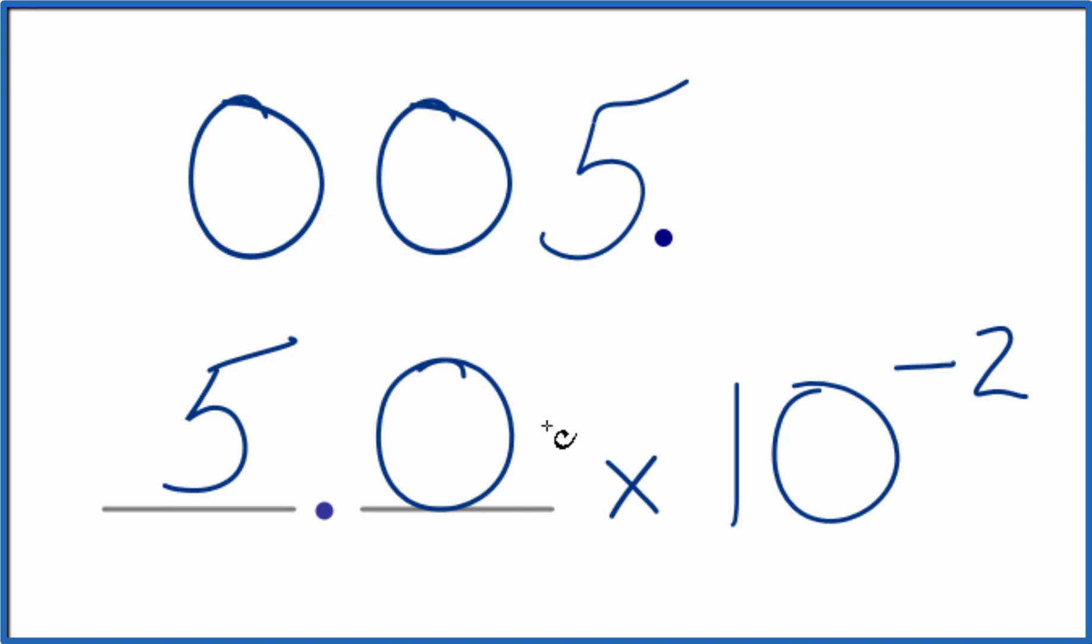But that's it. This is Dr. B converting the decimal 0.05 to scientific notation. The answer: 5 times 10 to the negative 2, or you could call it 5.0 times 10 to the negative 2. Thanks for watching.